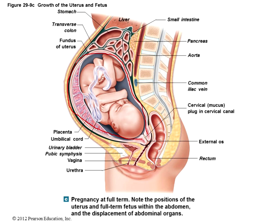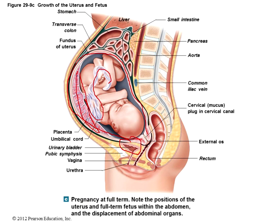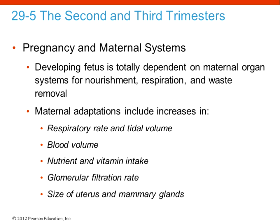At full term, you can see the placenta looking nice and vascularized and healthy, and of course the umbilical cord. You can also see how displaced all the other organs are — the digestive tract, small intestine, pancreas, aorta, and liver. But look at the urinary bladder sitting right below all that weight pushing directly down. You can see why a pregnant woman has to urinate quite frequently, especially in the third trimester — all that weight pushing directly down on the urinary bladder. This is a really nice cross-section of pregnancy at full term compared with a non-pregnant uterus.